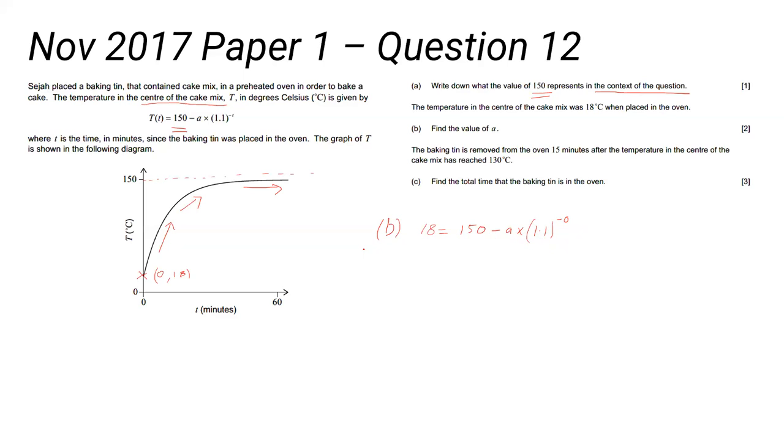Right. The baking tin is removed from the oven 15 minutes after the temperature in the center of the cake mix reaches 130 degrees. So you need to find 130 degrees here, okay, look across and find what time that happened.